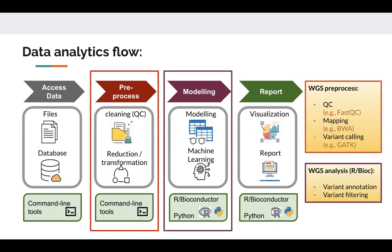After we have a subset of candidate variants, we need to do some variant annotation to annotate with the gene and functions, and do some variant filtering to remove those common variants from dbSNP and only retain those that are specific to your study. This is usually done using interactive programming languages such as R or Python.